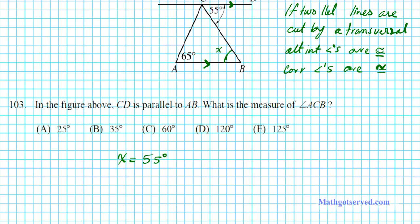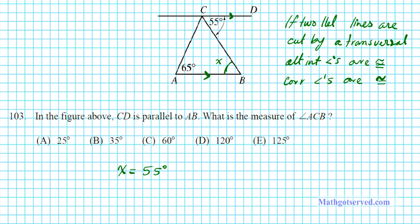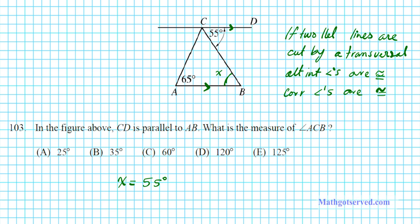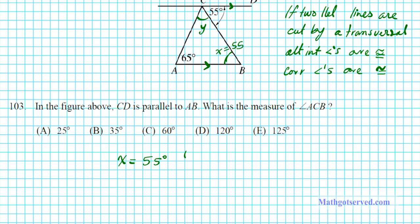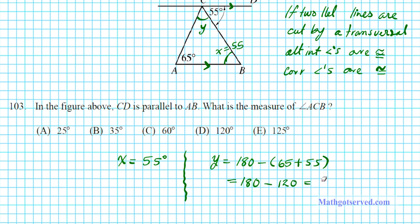We're asked to find angle ACB — let's call that Y. Now we can use the triangle angle sum theorem, keeping in mind that this angle is 55, to figure out angle Y. The sum of angles in the triangle is 180, so Y equals 180 minus the sum of the other two, which is 65 plus x. Since x is 55, we get 180 minus 120, giving us 60 degrees.